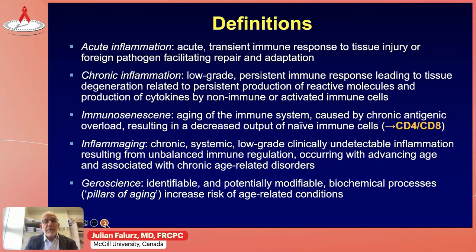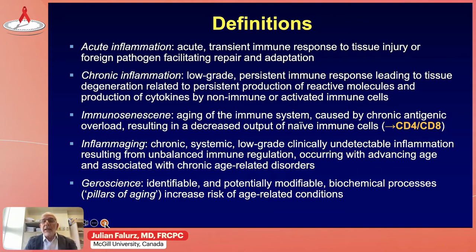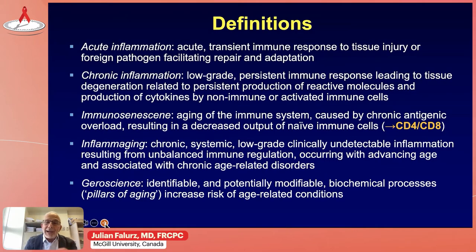Immunosenescence, which is related to chronic inflammation, refers to the aging of the immune system. It's caused by chronic antigenic overload resulting in a decreased output of naive immune cells, as well as many other immune changes, and is characterized by an inverted CD4 to CD8 ratio. Inflammaging refers to the chronic systemic low-grade clinically undetectable inflammation resulting from an unbalanced immune regulation.